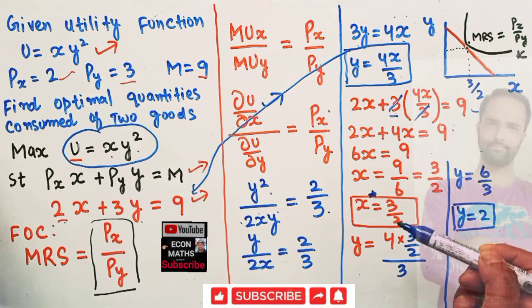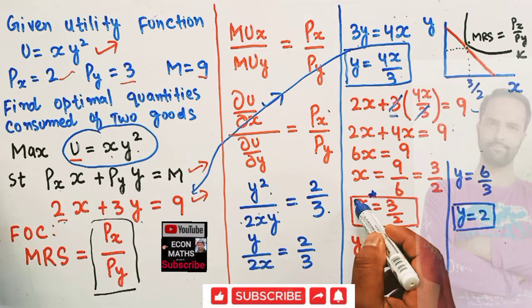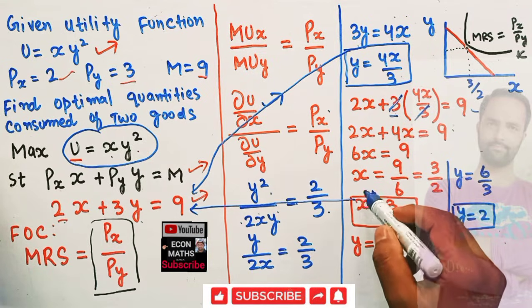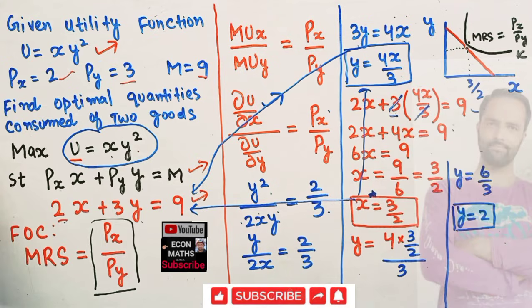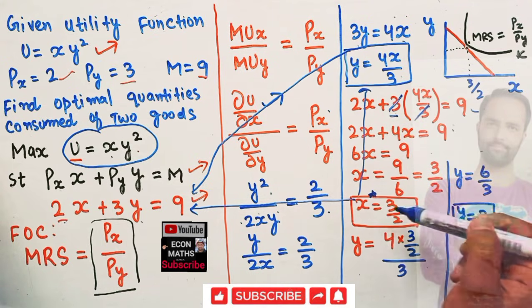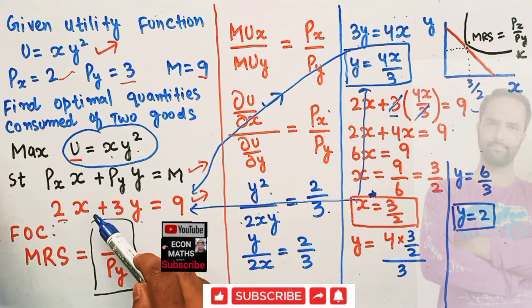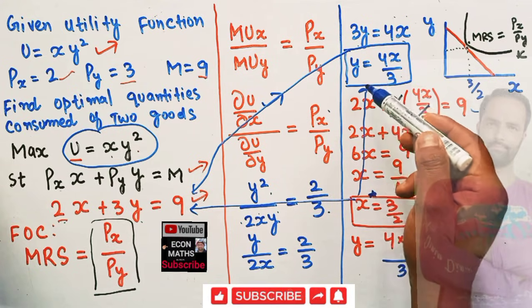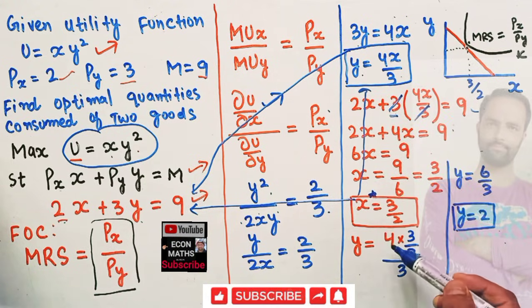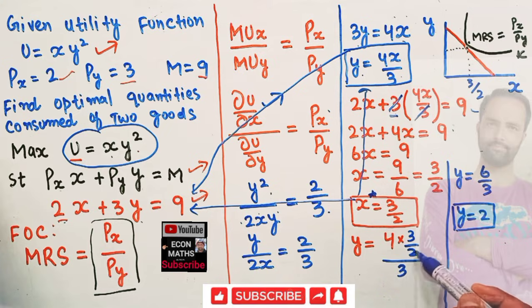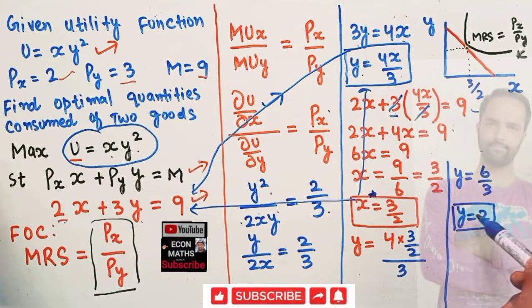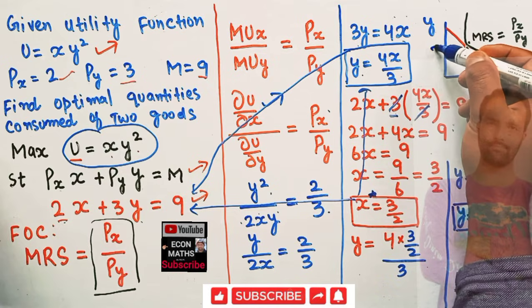Now we substitute the optimal value of x = 3/2 back into the equation y = 4x/3. Plugging in: y = 4·(3/2)/3 = (4·3)/(2·3) = 12/6 = 2. So the optimal quantity of good y is 2.